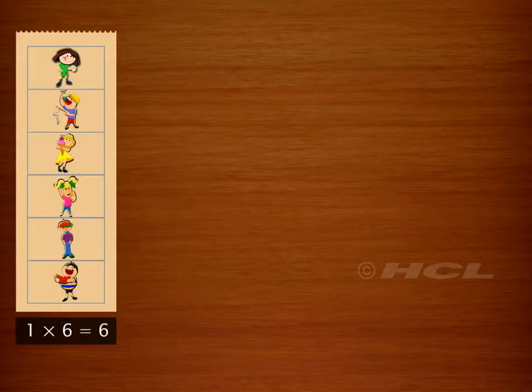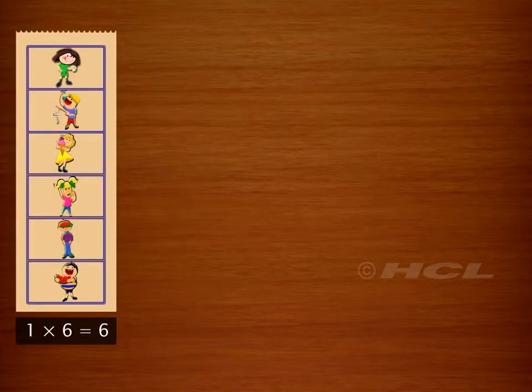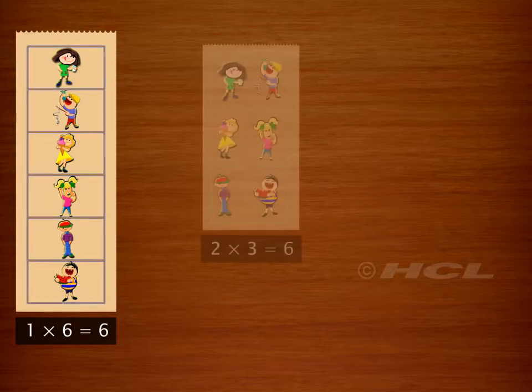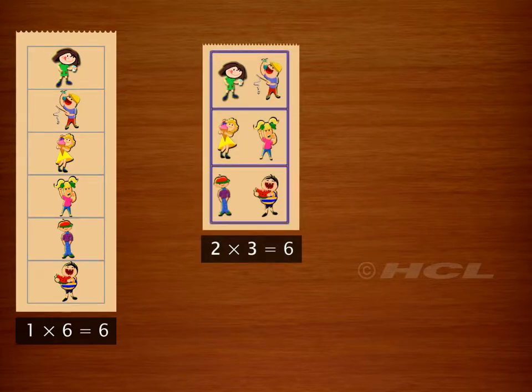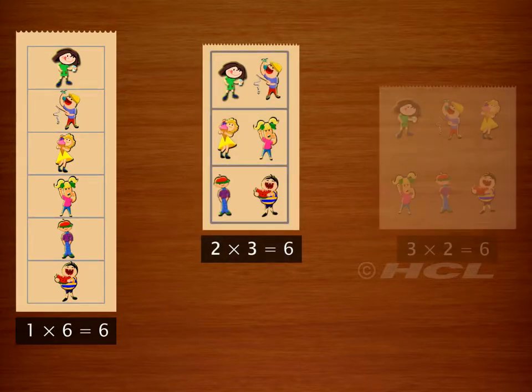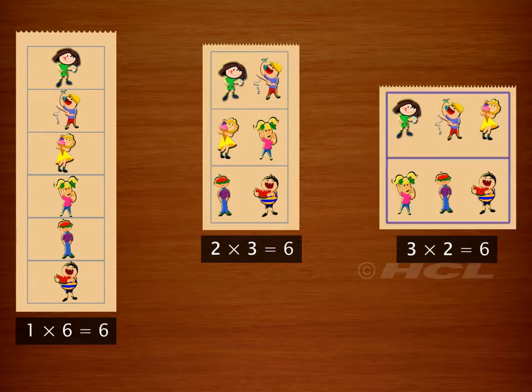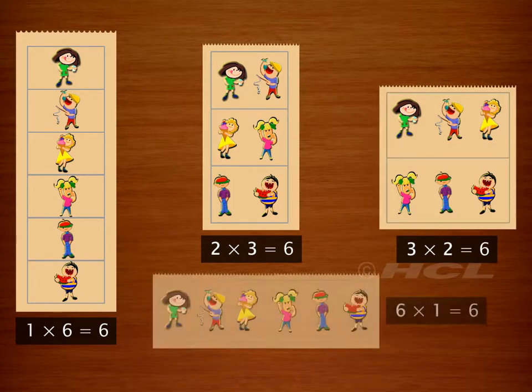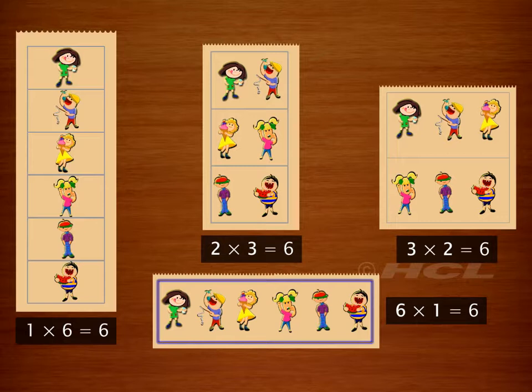We can divide the six children into six groups having one child each, three groups having two children each, two groups having three children each, or a single group having all the six children.